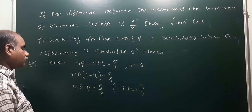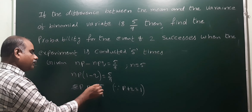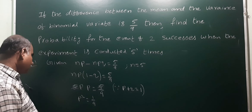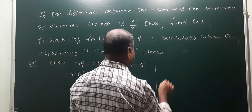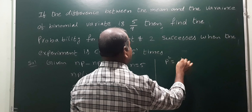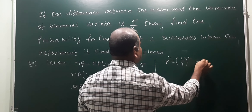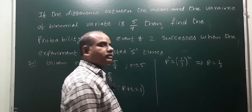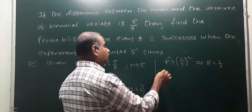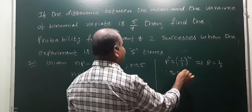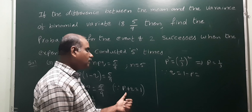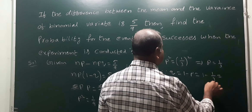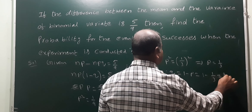The 5s cancel, so p squared equals 1/9, which equals (1/3) squared. Therefore p equals 1/3. Since p plus q equals 1, q equals 1 minus p equals 1 minus 1/3, which gives q equals 2/3.